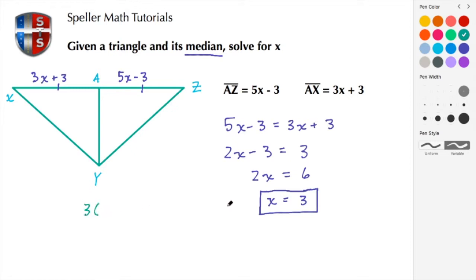We have 3x, and instead of x we're going to write 3, plus 3, equals 5 times x. Again, x is 3, and then we're going to subtract off 3. So 3 times 3 is 9, plus another 3 is 12.